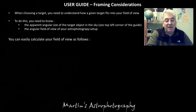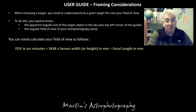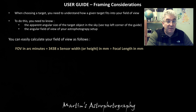You can calculate that field of view yourself very easily and it's done as follows. You take 3438 — a seemingly weird number — multiply it by the width of your sensor in millimetres, and then divide the answer by your focal length of your telescope in millimetres.